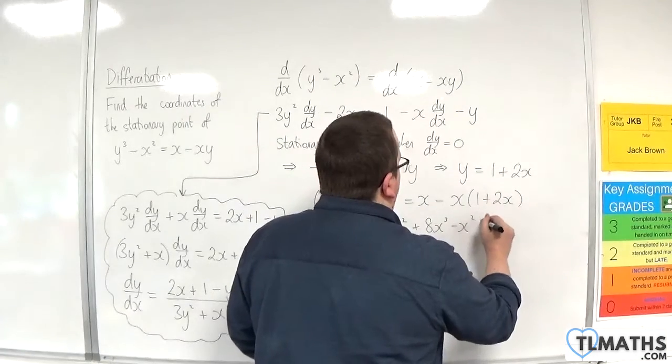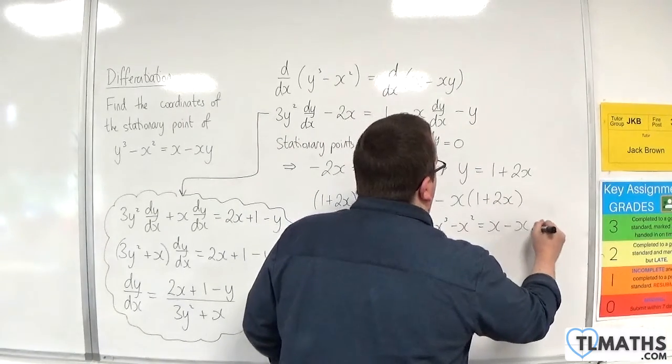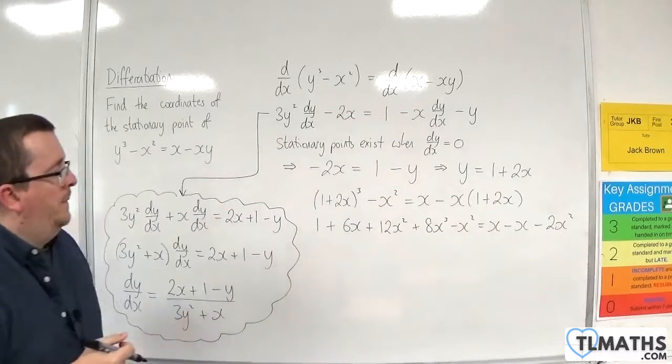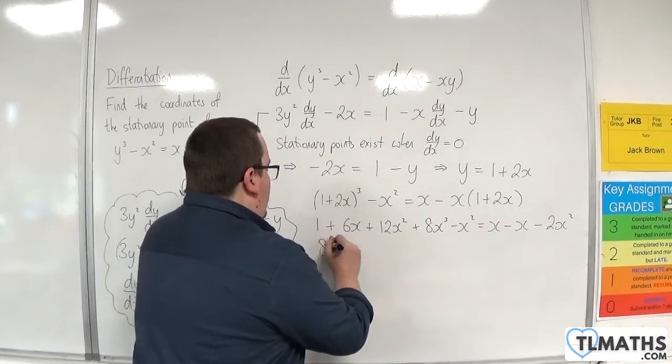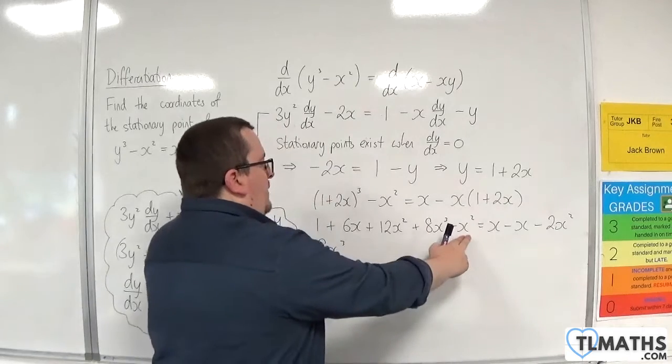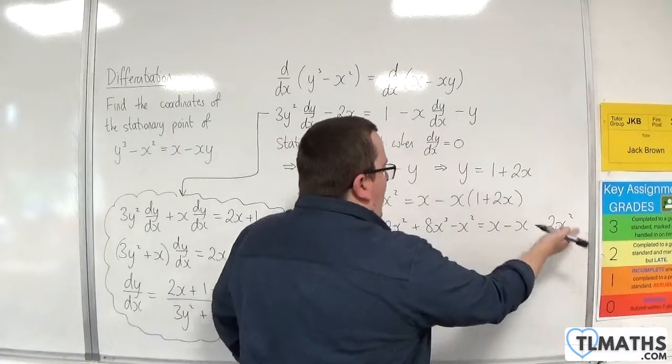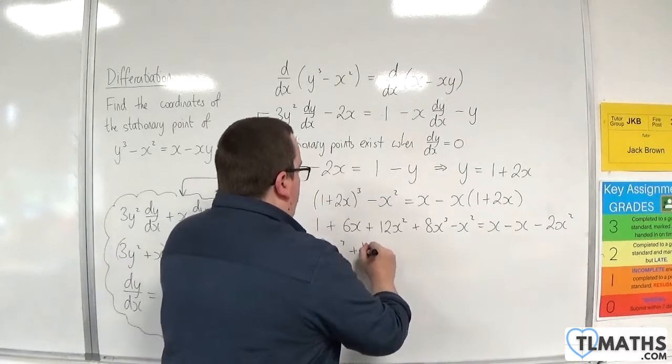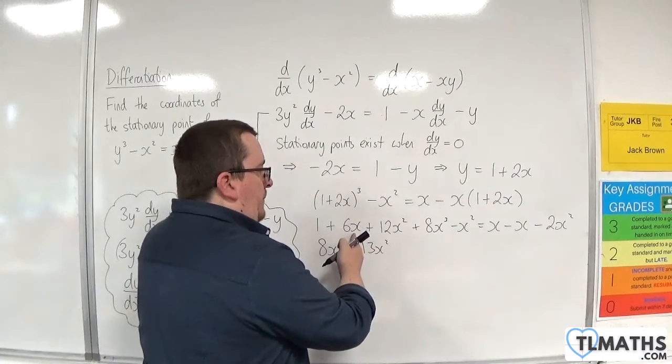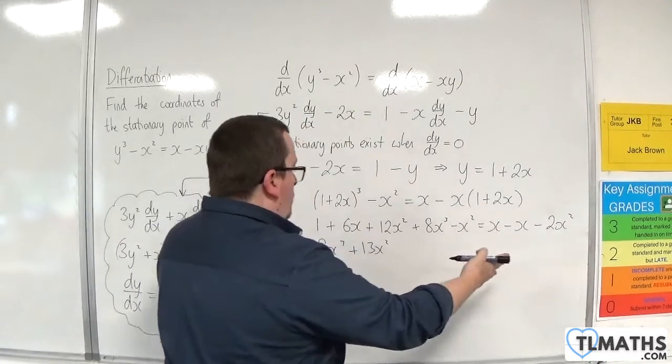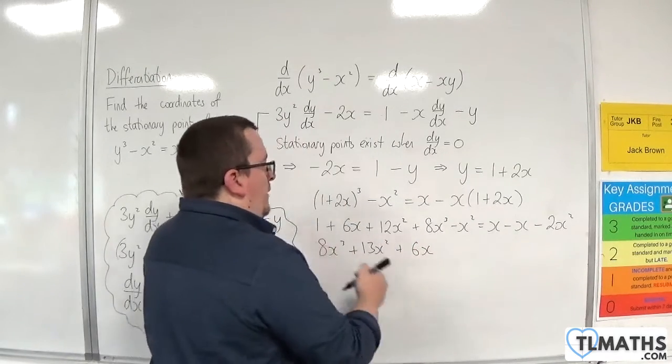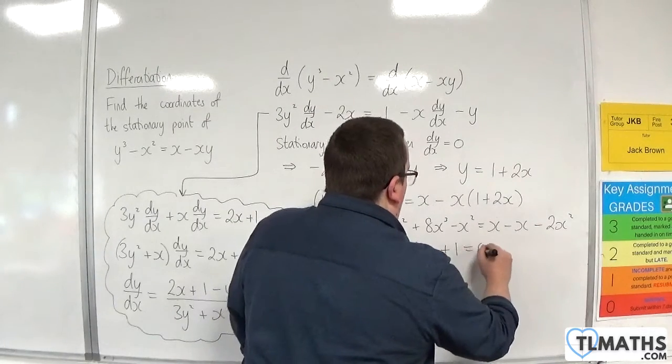Take away the x² is equal to x, take away x, take away 2x². Expanding that out. So, we've got the 8x³. We've got 12x² - x². That's 11x². And we're going to add 2x², so that's 13x². Then we've got the 6x. x - x, they're gone. So, we've just got 6x. And then we've got the +1. That's going to be equal to 0.